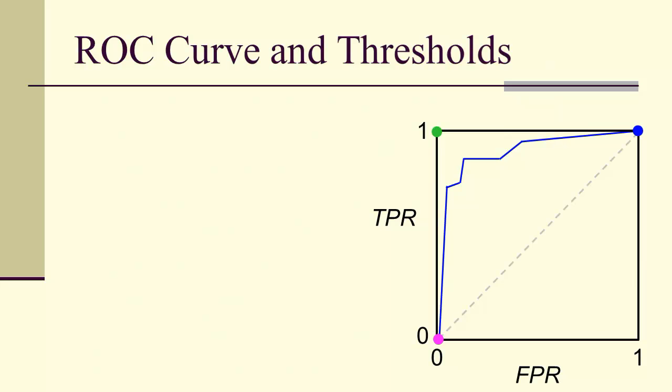So here is a receiver operating characteristic. Notice that a threshold of 0 would give us this far corner, because that gives us the extremely positive. Threshold of 0 means everything is above 0. All the predictions are above 0. Everything's classified as 1.